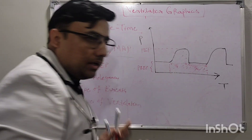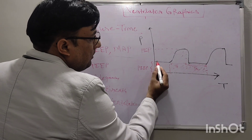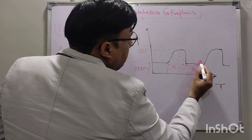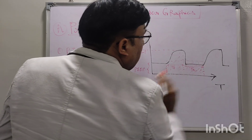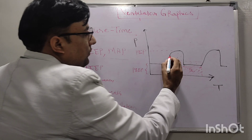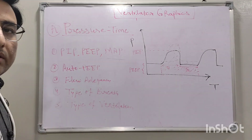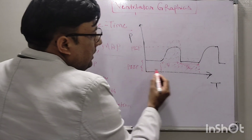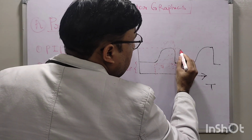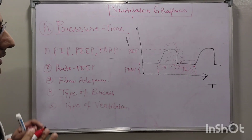If you want to increase the mean airway pressure to improve oxygenation, there are three options. First, you can increase the PEEP — if you increase the PEEP, the area under the curve will increase and mean airway pressure will increase. Second, you can increase the PIP — increasing PIP also increases the area under the curve and mean airway pressure. Third, you can increase the inspiratory time — increasing I-time also increases the area under the curve and mean airway pressure.